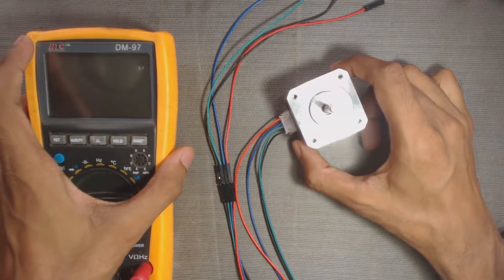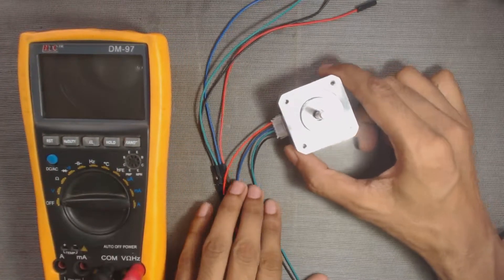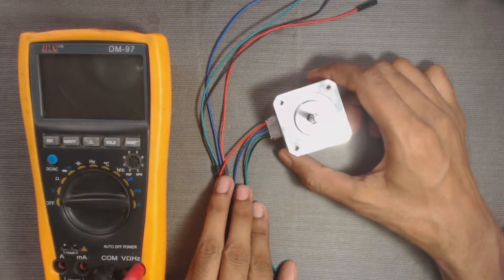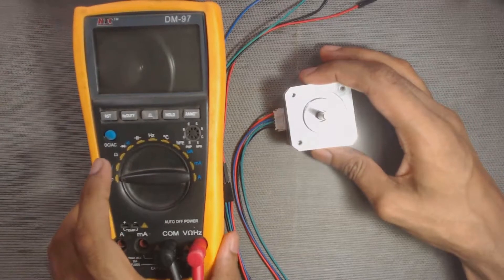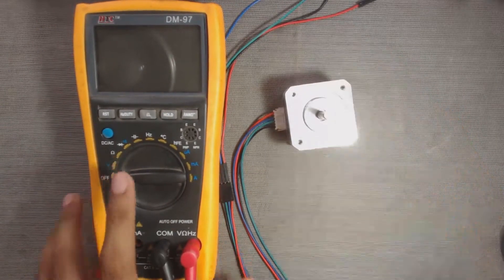Hi, welcome to DPV Technology. In this video, we will learn how to identify the two coils of a four-wire bipolar stepper motor with the help of a multimeter. Let's get started.